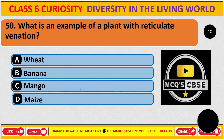What is an example of a plant with reticulate venation? The correct answer is C: mango.